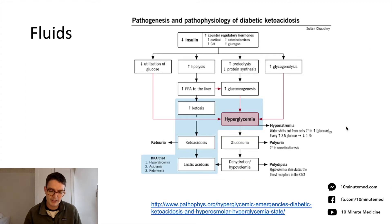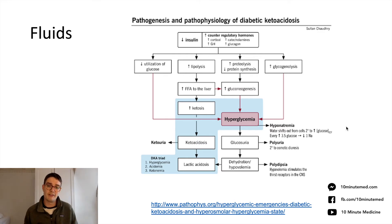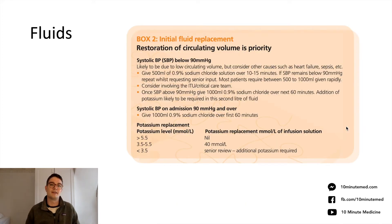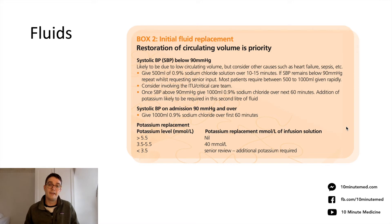Patients with DKA are profoundly intravascularly dry for various reasons — they're polyuric, have high glucose and osmotic diuresis, and are often nauseous and vomiting. The most important thing initially is resuscitation of their circulating volume. If their blood pressure is low initially — which will happen if they come in via ambulance — a lot of fluid will be given to bolster this, and if it is an issue, getting ITU involved at an early stage is important.